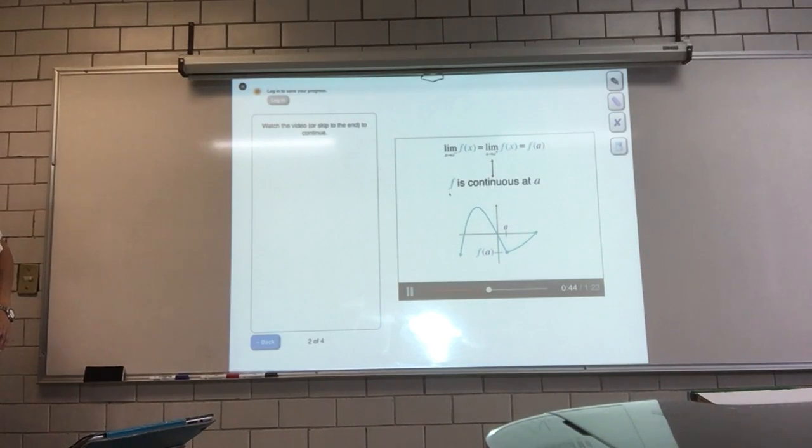This turns out to be the formal definition for when a function is continuous. In other words, a function is continuous at a point, then the left limit is equal to the right limit, and both limits are equal to the value of the function at that point. If you ever encounter a tricky function and you want to know if it's continuous somewhere, this is how you can figure it out. First find the left and right limits, then compare them to the value of the function. If they all match, then it's continuous.